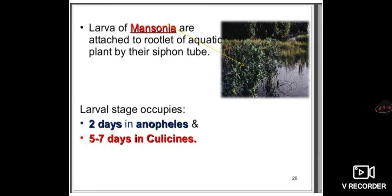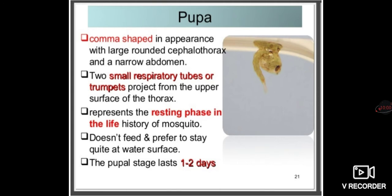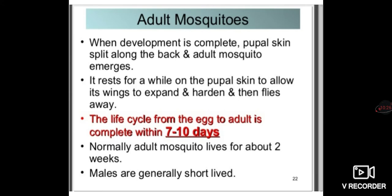Mansonia larvae are attached to the roots of aquatic plants by their siphon. The pupa is comma-shaped with a large round cephalothorax and narrow abdomen. Two small respiratory tubes or trumpets project from the upper surface of the thorax. The pupal stage lasts two days. The adult mosquito life cycle is seven to ten days or two weeks. Males are generally shorter-lived than females. The female is the blood-sucking mosquito.